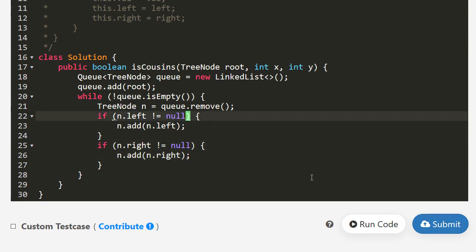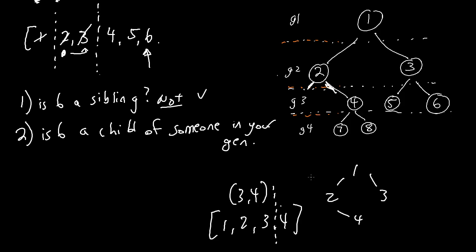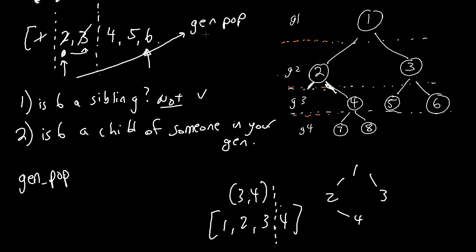How do we handle keeping track of generation boundaries? We can use the idea of a generation population counter - a gen pop counter. At any point, it would be nice to know how many people are left in your generation. So for example, at certain points the gen pop should be 3, then 2, then 1. Here our generation population is 1, meaning there's only one other person left in your generation.